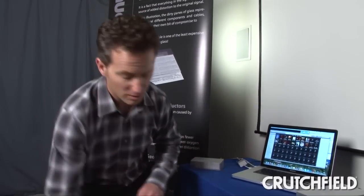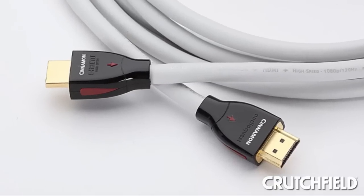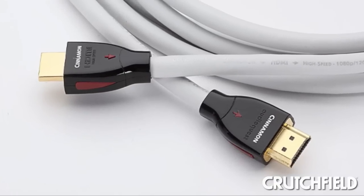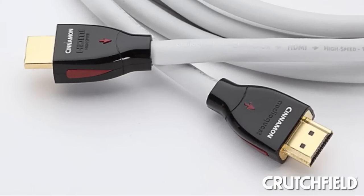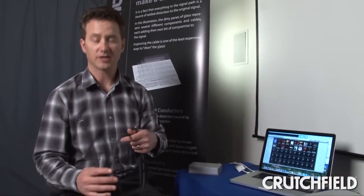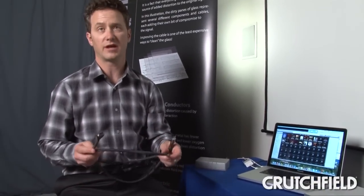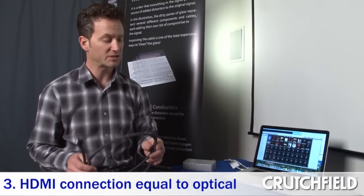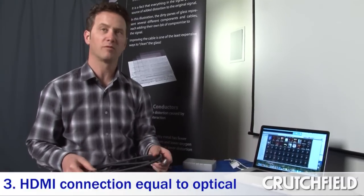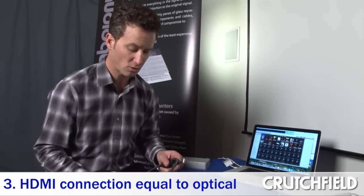A lot of computers also come now with an HDMI connection. HDMI is pretty much the standard for audio-video connections in the home theater world. If you have an HDMI connection on your computer, you could simply take advantage of that and use it to go from the computer to the stereo. This would give you equal performance to the TOS link — not better, not worse, but pretty much equal.